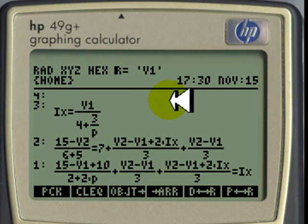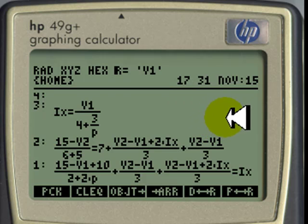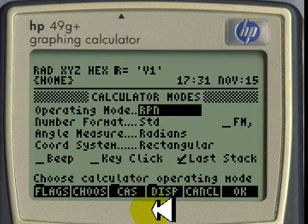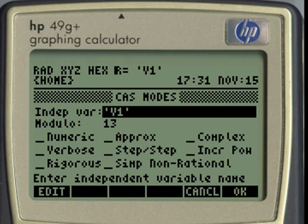These are the three equations that we need to solve for V1, V2, and Ix. But before doing that, make sure that your calculator is not in approximated mode. How do you do that? You press Mode. Then you go to the CAS. And in there, you make sure that this flag, Approx, is unchecked. Once you've done that, then you're ready to solve.